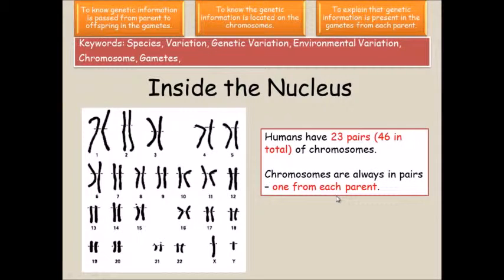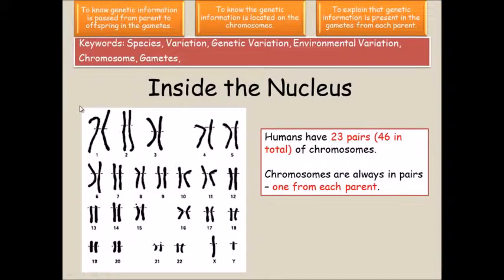Inside a given nucleus, inside a given cell, you have 23 pairs of these chromosomes. The reason why these chromosomes are referred to as 23 pairs and not 46 is, as you can see here, these are the 23 chromosomes that you possess and each one of them comes in a pair. So 23 times 2 is 46, and you receive each chromosome from a single parent — for example, one may have come from your mum and the other one from your dad.